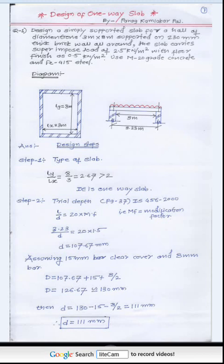Assuming 50mm clear cover and 8mm bar diameter, we calculate the total depth D. The effective depth d = 107.67mm. Total D = 107.67 + 15 (clear cover) + 8/2 (half bar diameter) = 130mm (rounded). Then the effective depth d = 130 - 15 - 8/2 = 111mm. This is the required effective depth for further calculations.